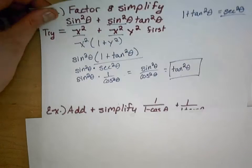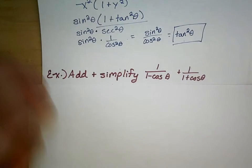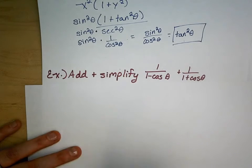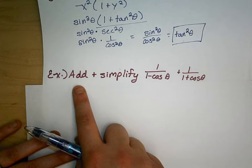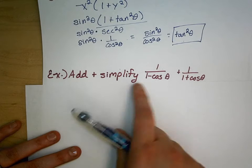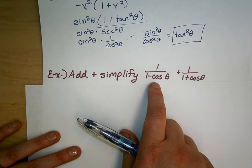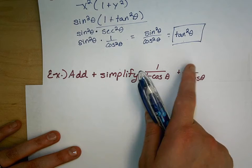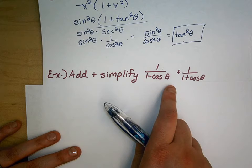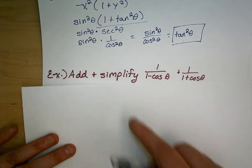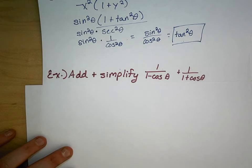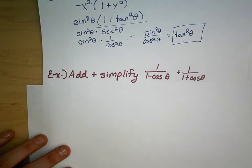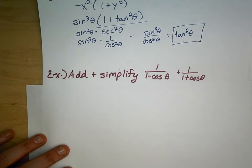Okay, so look at this next one. Add and simplify 1 over 1 minus cosine plus 1 over 1 plus cosine. Go ahead and pause the video and try this on your own, and then we will do it together.